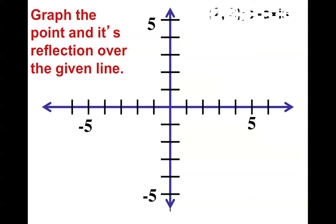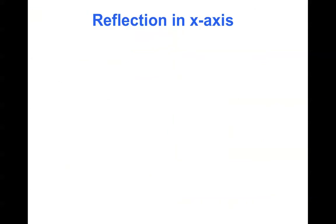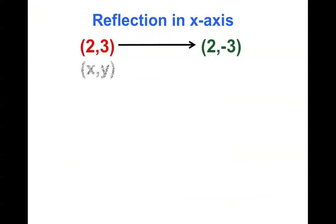Let's take this a little deeper. What if I had this point and I want to reflect it in the x-axis? I am three units away from the line of reflection. Therefore, just like a mirror, my image point would have to be three steps on the other side of the line of reflection. Notice the pattern with the points: the x-coordinate stays the same, but the y-coordinate becomes the opposite. A reflection in the x-axis means the x-coordinate stays the same but the y-coordinate becomes the opposite of the original point.